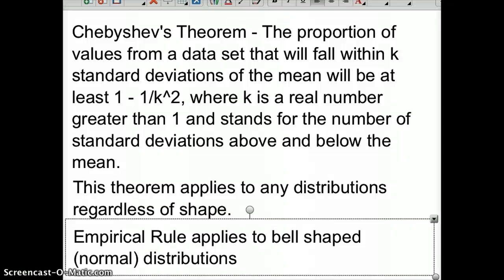All right, Chebyshev's theorem, if I hopefully pronounced that right, is the proportion of values from a data set that will fall within k standard deviations of the mean. It will be at least 1 minus 1 over k squared, where k is a real number greater than 1, and k stands for the number of standard deviations above and below the mean.